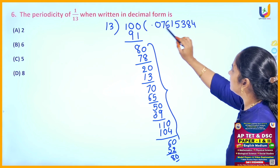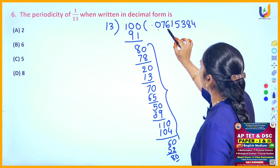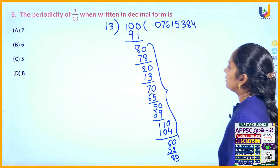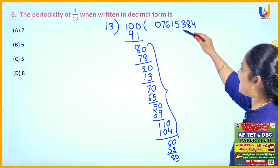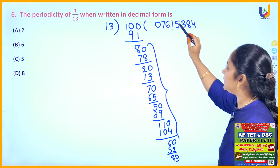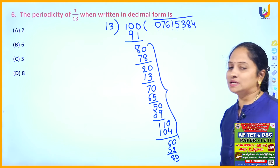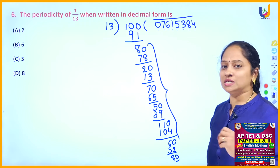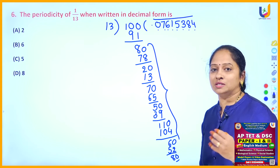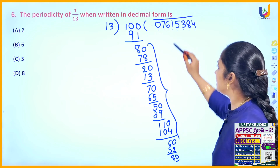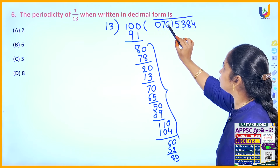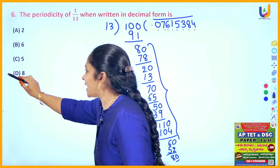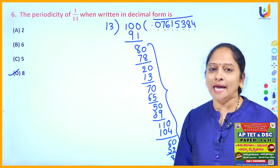After how many digits did the repetition start? Counting: 1, 2, 3, 4, 5, 6, 7, 8 — after 8 digits, the repetition started. For these 8 digits we can write a bar form. Period means which digits are repeating; periodicity means how many digits are repeating. Here 8 digits are repeating, so you can choose answer option D: 8.